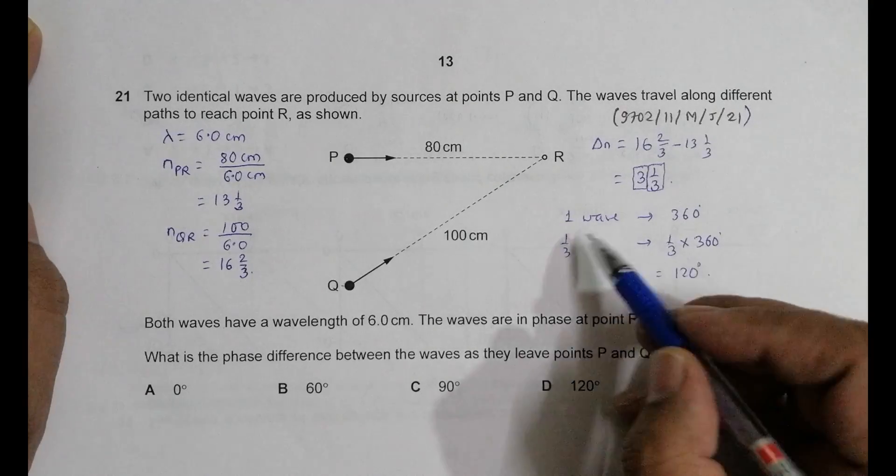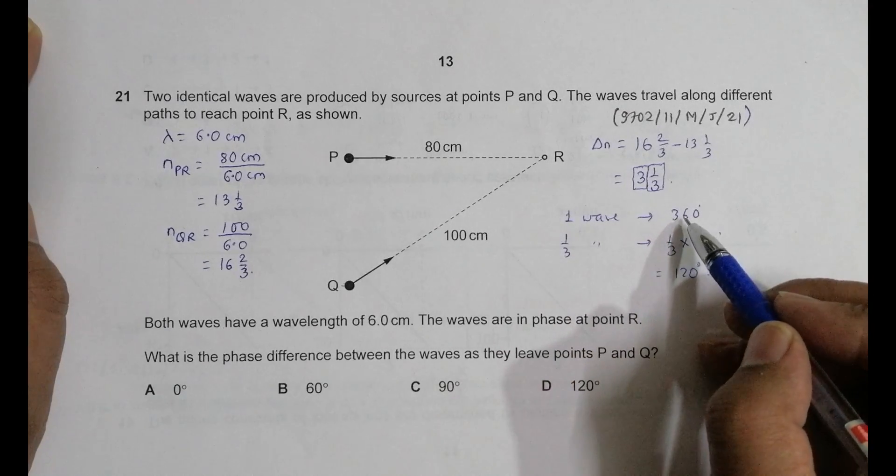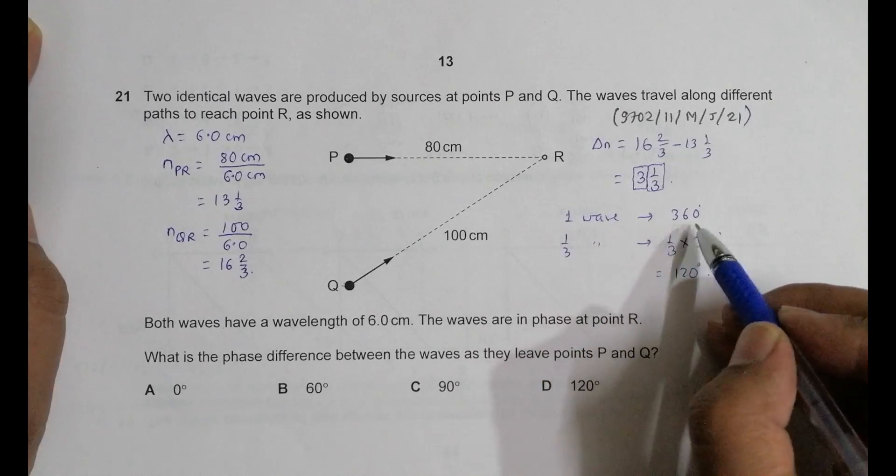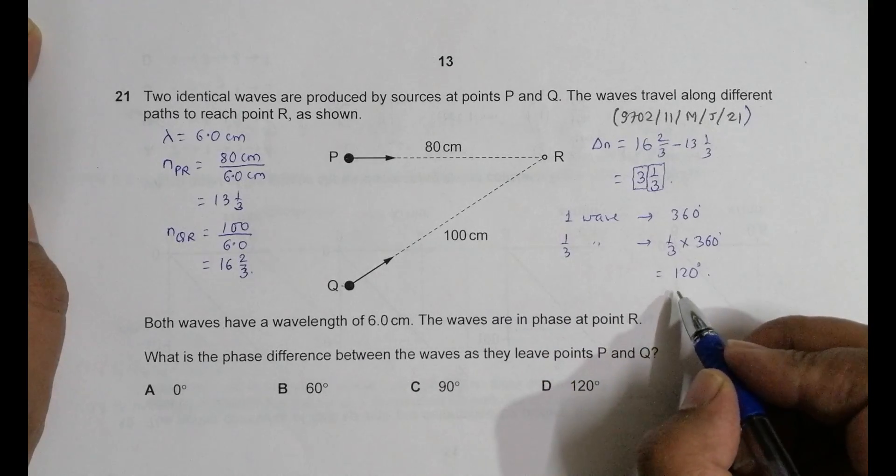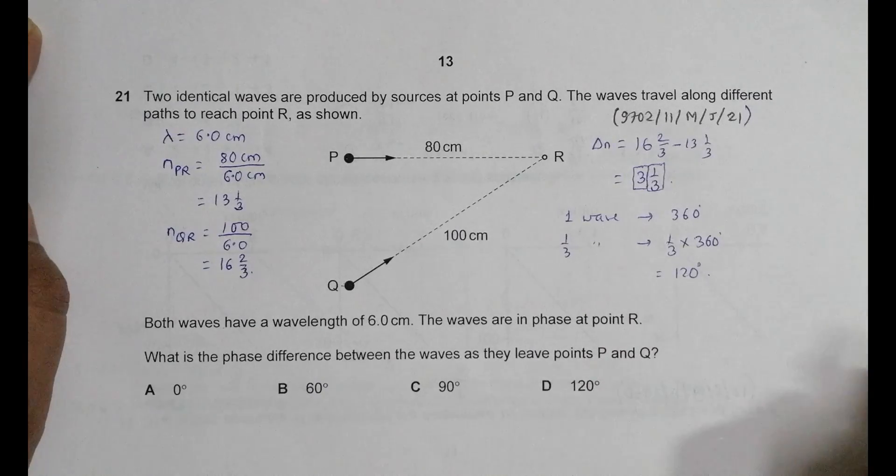So it is something that we must remember that when there is difference of one wave, the phase angle difference is 360 degree or 2π. So half wave, 180 degree or π. So for 1/3 it is 2π/3 actually, 2π/3 in terms of π. So our choice number D should be the correct choice.